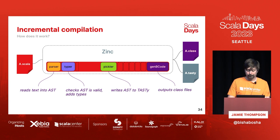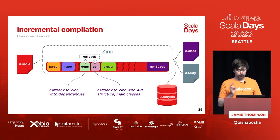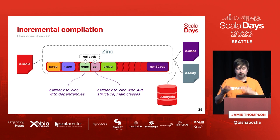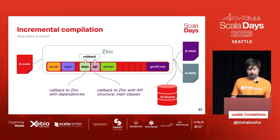What Zinc does is modify this pipeline by adding two extra phases before the pickler phase: the dependencies phase, which traverses the AST and detects method bodies to track which definitions from which files are used; and the API phase, which records signatures similarly to the pickler. Both phases call a callback provided by Zinc with the dependencies and API data, which gets written into the analysis.